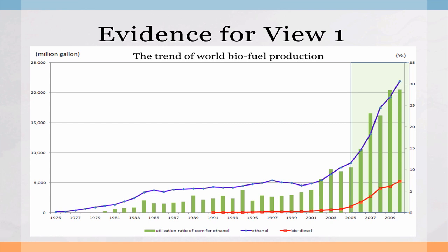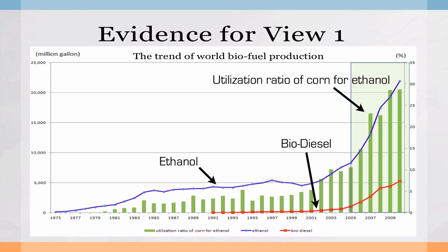So this is the original graph. There are three things described on here. The first one — the blue line — is ethanol, showing the trend of ethanol production. The second is biodiesel production. And finally, the utilization ratio of corn for ethanol. The title of this is Evidence for View Number One, and the subtitle is The Trend of World Biofuel Production. So let's look at how we can present this better.